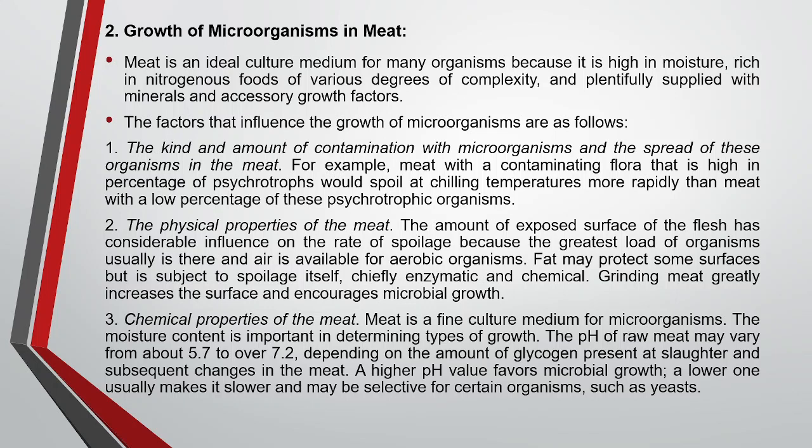The second principle is growth after invasion. Meat is an ideal culture media because it is high in moisture, rich in nitrogenous food, and plentifully supplied with minerals and accessory growth factors. Factors determining microbial growth include the kind and amount of contamination. For example, meat with a contaminating flora that is high in psychrotrophs would spoil at chilling temperature, since psychrotrophs are capable of more rapid growth at low temperatures.